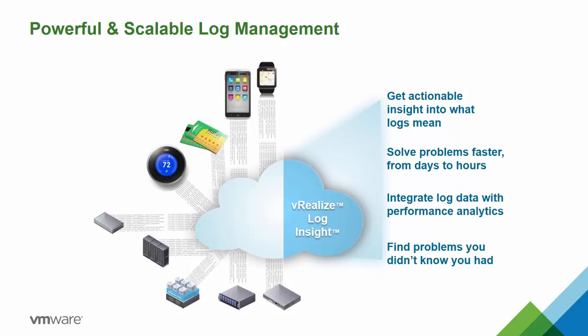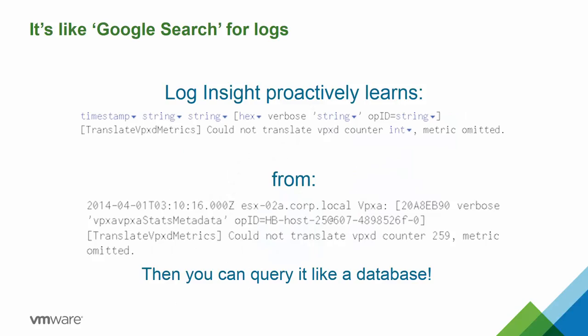Log Insight ships with out-of-the-box knowledge of vSphere and many other logs in the form of content packs — collections of queries, alerts, dashboards, and fields. It has a vast library of VMware and third-party content packs such as Active Directory. Log Insight effectively translates cryptic and unstructured log details into meaningful, searchable data. Simply put, Log Insight is like having a Google search engine for log files — it ingests the information, parses it, and gives you that Google-like search capability within your log data.